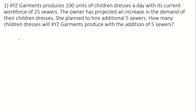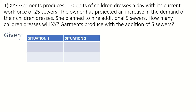Let's list the given. The given is better listed in a table because this is a proportion problem. The first row will be the number of dresses, and the second row will be the number of sewers. The quantities you put in situation one are from the same situation, and in situation two, the quantities are from the different situation.